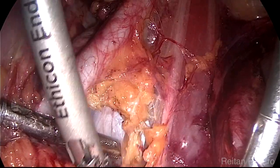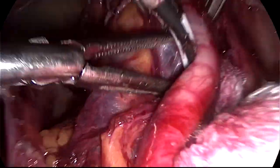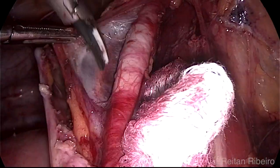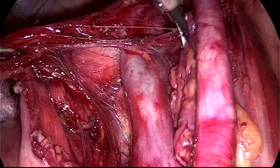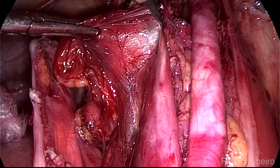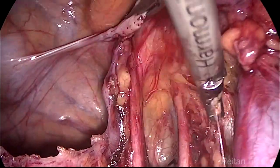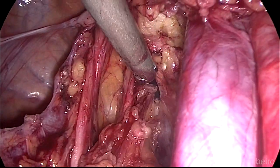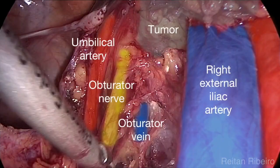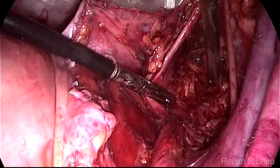After establishing the anatomical landmarks, the external iliac vessels lymphadenectomy is performed. The application of divergent fossa is a very useful tool for this step. The obturator nerve is identified and preserved and the lymphovascular tissue around the obturator fossa is then extracted. The tumor is identified and the landmarks are outlined in the obturator fossa. This is a partial view of the obturator fossa after the dissection.